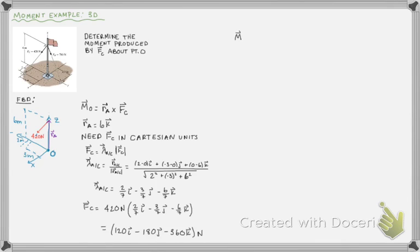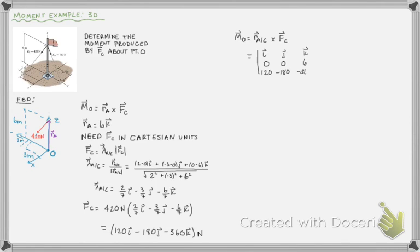Now I have both the position vector and the force in Cartesian units, so I can find MO using the cross product: RA cross FC. Writing it as a matrix with I, J, K on top; 0, 0, 6 for the position vector; and 120, −180, −360 for the force. When I do the cross product, I get 180I + 720J Newton meters. That is how you solve a moment problem in three dimensions. That's the end of this video — I hope you found it helpful.